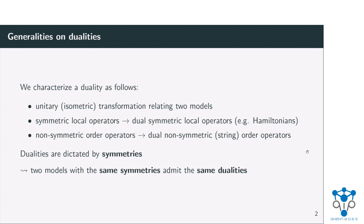More generally, we would like to characterize a duality, or at least a non-trivial duality, as follows: it's some unitary or in general isometric transformation that relates two models that can a priori look very different — they might even have different degrees of freedom. But importantly, it maps symmetric local operators to dual symmetric local operators. What this tells you is that it's not just any generic unitary transformation, because a generic unitary would not preserve the locality of your Hamiltonian. In general, it also maps non-symmetric order operators to dual non-symmetric string order operators. This cannot happen if you just have a finite-depth circuit.